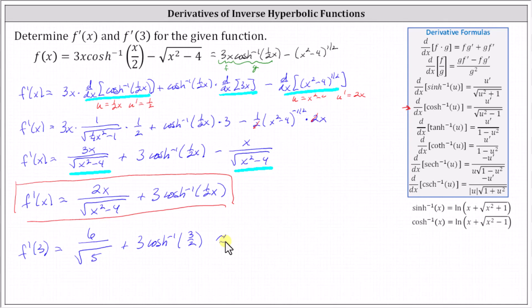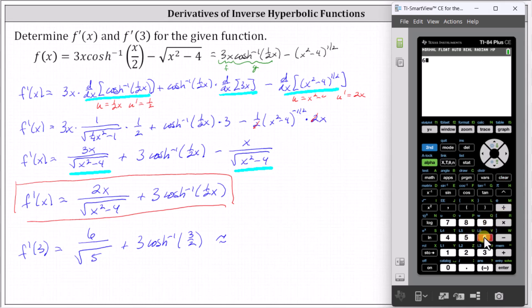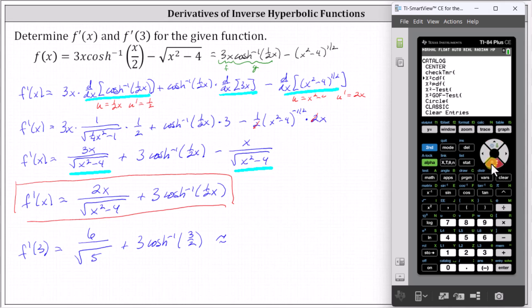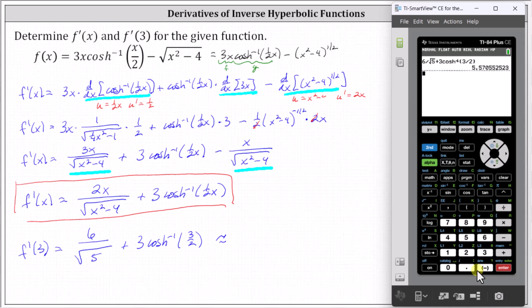Now let's evaluate this on both the TI-84 and the Desmos graphing calculator. Using the TI-84 first, we enter six divided by — press second x-squared for the square root — five, right arrow, plus three. For the inverse hyperbolic cosine function we use the catalog by pressing second zero, then go down to the C's by pressing the green C, which is the program button. We scroll down to inverse hyperbolic cosine, press enter, enter three divided by two, close parenthesis, and press enter. To four decimal places we have 5.5706.